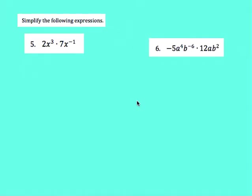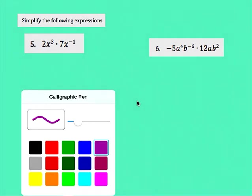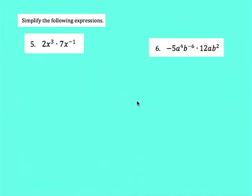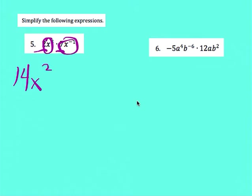For number 5, remember when multiplying monomials you add the exponents. We multiply the coefficients: 2 times 7 is 14. Then X to the third and X to the negative 1 are both on top, so I add those exponents: X to the third times X to the negative 1 becomes X to the second. I've now eliminated the negative exponent, so the final answer is 14X squared.